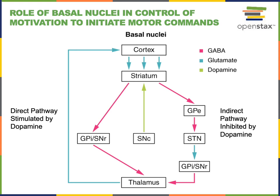The neurons in the striatum then inhibit neurons found in the globus pallidus. These neurons in the globus pallidus will inhibit other neurons in the thalamus, and the neurons of the thalamus can stimulate the neurons of the cortex. This flow describes the direct pathway: the cortex stimulates the striatum, the striatum inhibits the globus pallidus, and the globus pallidus inhibits the thalamus.